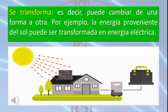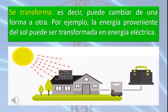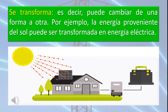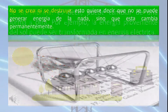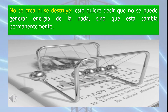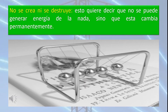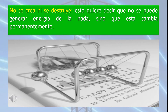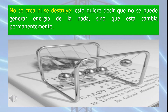Número 2: la energía se transforma, es decir, puede cambiar de una forma a otra. Por ejemplo, la energía proveniente del sol puede ser transformada en energía eléctrica. Número 3: la energía no se crea ni se destruye. Esto quiere decir que no se puede generar energía de la nada, sino que ésta cambia permanentemente.